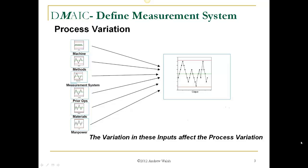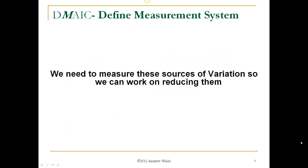As we saw in previous slides, variation in the inputs overall affects the process variation for our outputs, so we'd like to be able to control these. In order to control them, we have to be able to measure them — measure these sources of variation so we can work on reducing them. The ones causing the most variation in the output, if we can reduce their variation, we should be able to reduce the variation in the output.